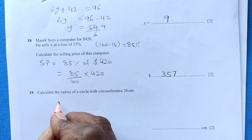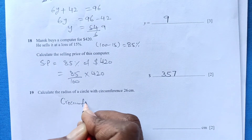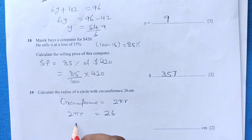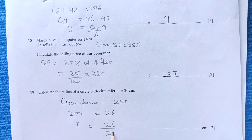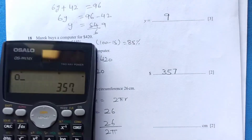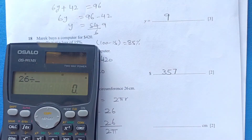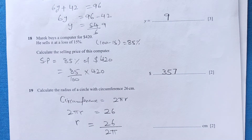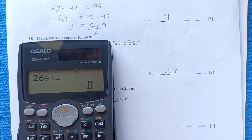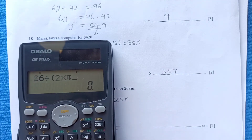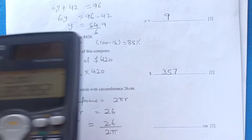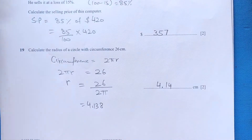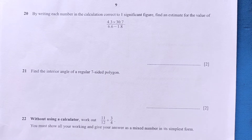Question 19: Calculate the radius of a circle with circumference 26 cm. The formula is 2πr = 26, so r = 26 divided by 2π. Calculating: 26 ÷ (2π) = 4.138, which to 3 significant figures is 4.14.